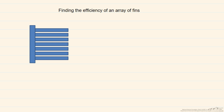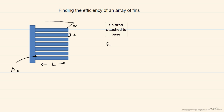We define L as the length of a fin, T is the thickness of the fin, W is the width back into the paper, and A sub B is the area of the exposed base — in other words, the area of the total base minus the fin area attached to it. Assuming rectangular fins, the fin area attached to the base is just W times T.